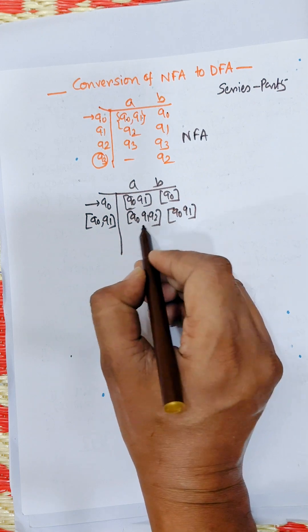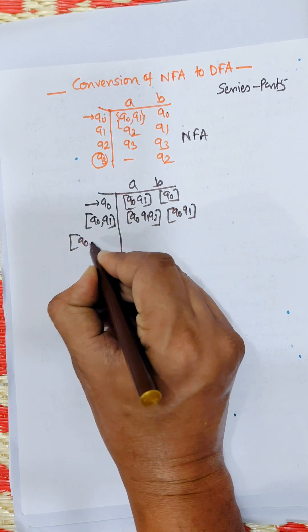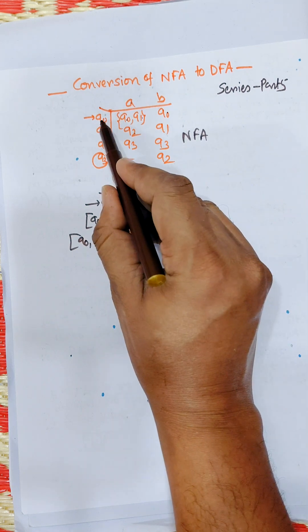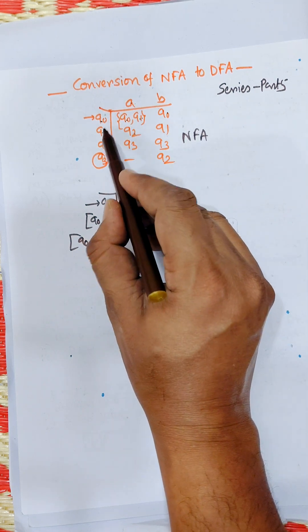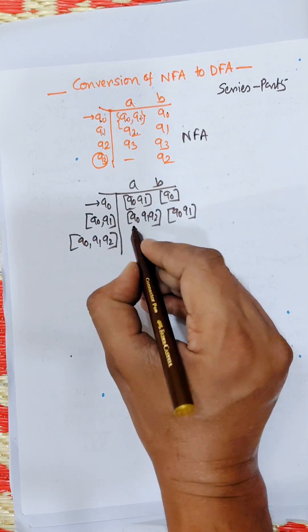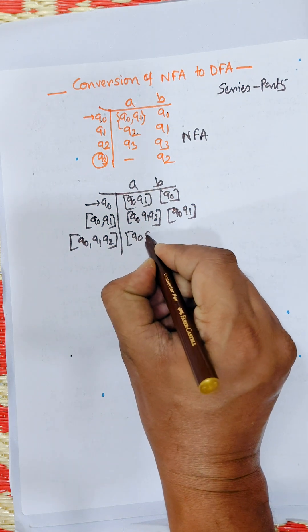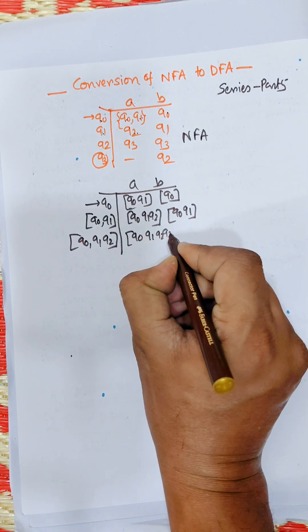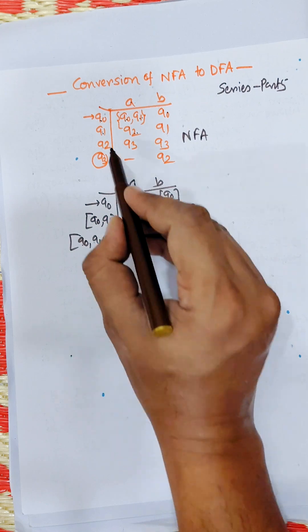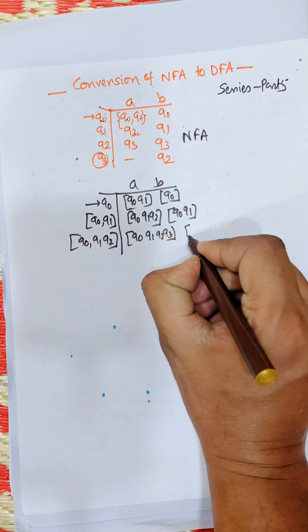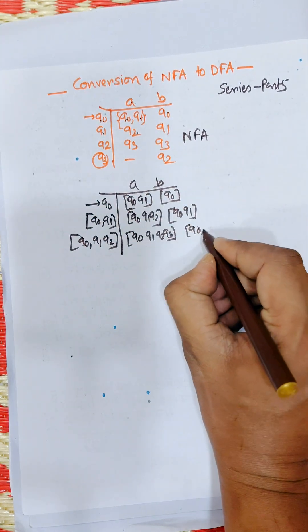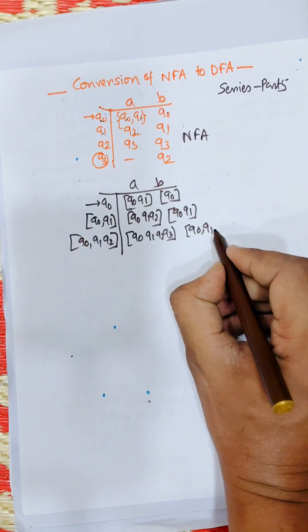The new present state is Q0Q1Q2. From Q0 on a: Q0Q1, from Q1 on a: Q2, from Q2 on a: Q3. The union gives Q0Q1Q2Q3. For Q0Q1Q2 on input b: Q0 gives Q0, Q1 gives Q1, Q2 gives Q3, so the union is Q0Q1Q3.